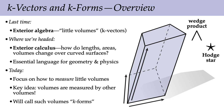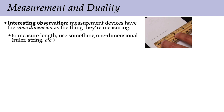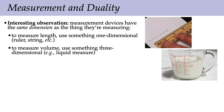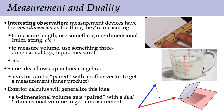Let's think for a moment about the whole idea of measurement. An interesting observation is that measurement devices typically have the same dimension as the thing they're measuring. To measure length, we use something one-dimensional like a ruler or a string. To measure volume, we use something three-dimensional like a liquid measure. This same idea shows up in linear algebra: if we have a one-dimensional vector, we can pair it with another one-dimensional vector using the inner product to get a measurement along some direction. Exterior calculus will generalize this idea — a K-dimensional volume gets paired with a dual K-dimensional volume to get a measurement.